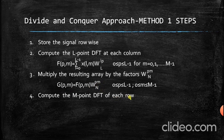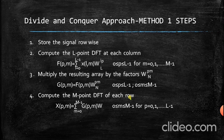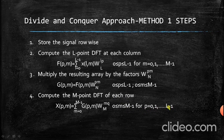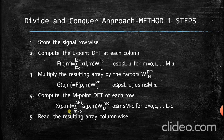The next step is to compute the M-point DFT of each row, given as sigma over M from 0 to capital M minus 1 of capital G of P, M times W_N^MQ, where M lies from 0 to capital M minus 1. Here, each row corresponds to P values of 0, 1, and so on up to capital L minus 1. The resulting array is the required transformation signal capital X of P, Q in two-dimensional form. The final step is to read the resulting array column-wise.